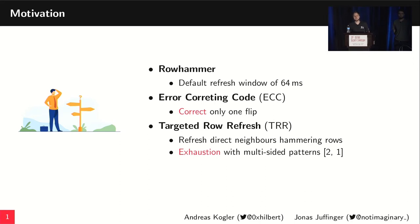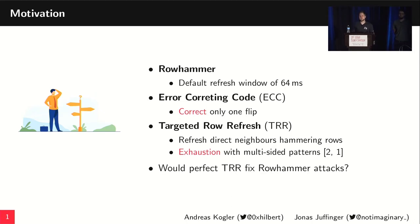However, in the past one to two years, we have seen that these TRR implementations — the first ones — were flawed, because the resources of these TRR implementations can actually be exhausted and then they won't protect against certain Rowhammer attacks anymore. In this paper, we asked the hypothetical question: would a perfect TRR implementation fix Rowhammer overall?